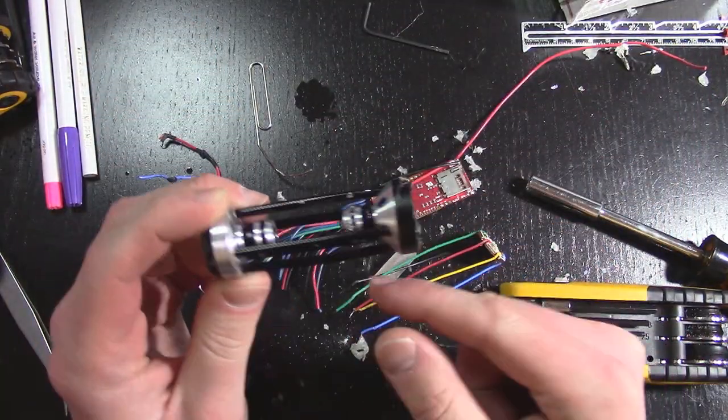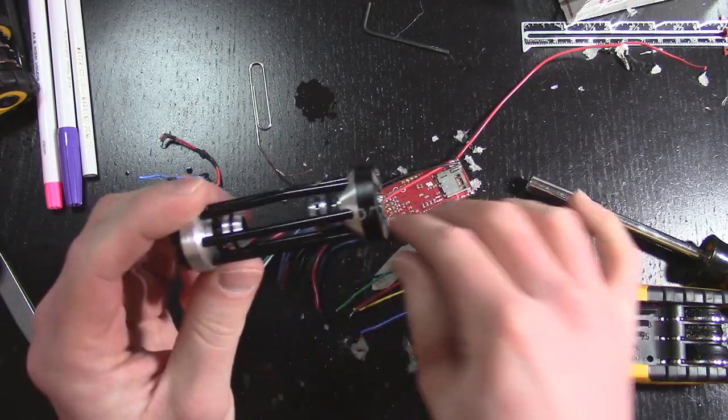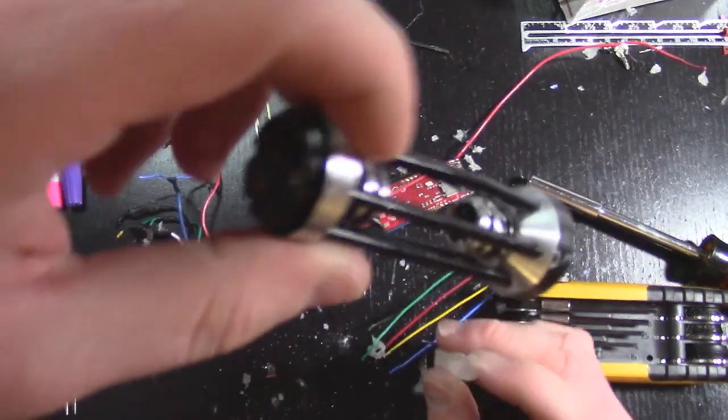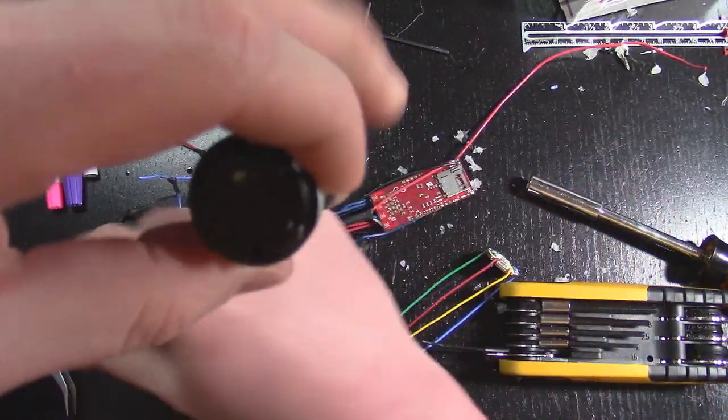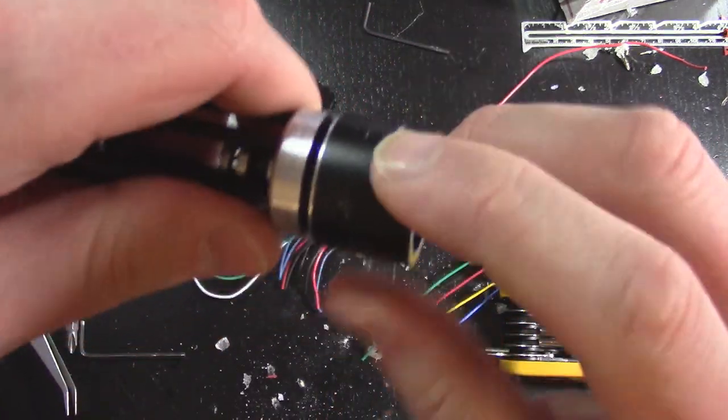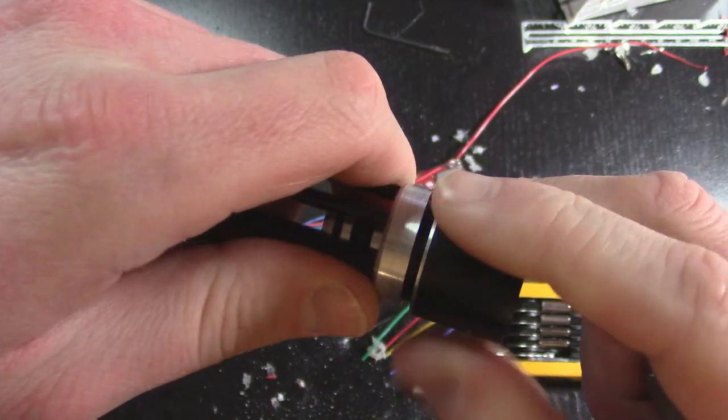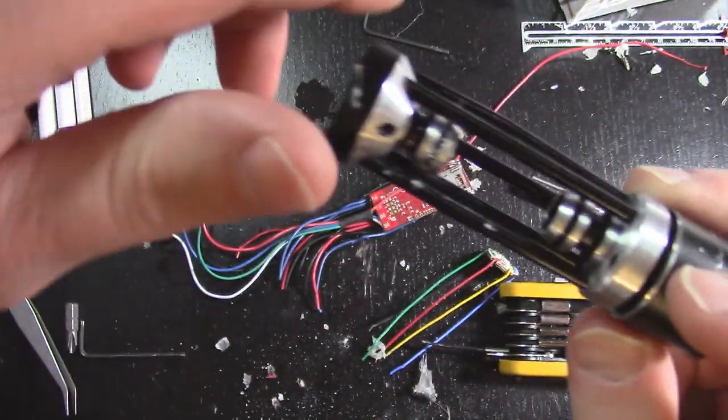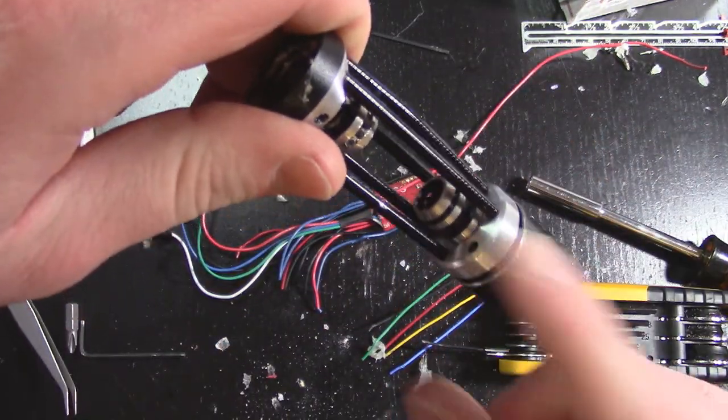Alright, so the Saber Forge crystal chamber had the crystal chamber and the heat sink or the LED housing just screwed on like that. That's actually not too bad, I actually kind of like that because it's all one module and I kind of wish they sold this by itself.